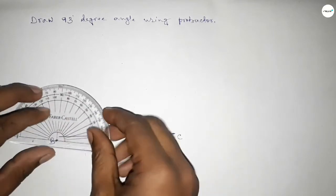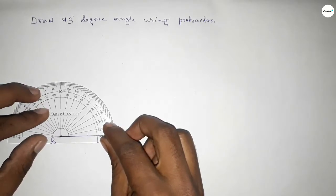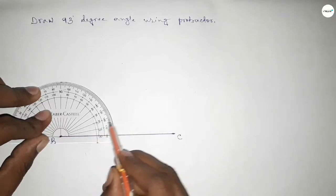Now putting the protractor on the point B perfectly, then counting the angles. So this is starting 0, 10, 20, 30, 40, 50, 60, 70, 80, 90...